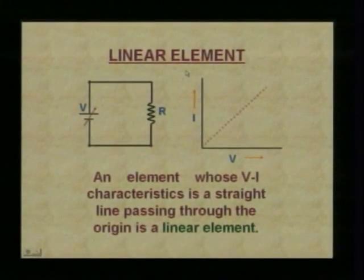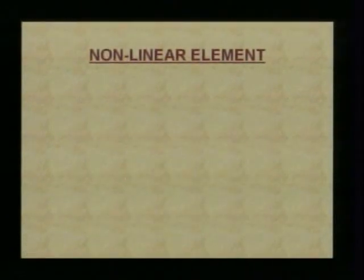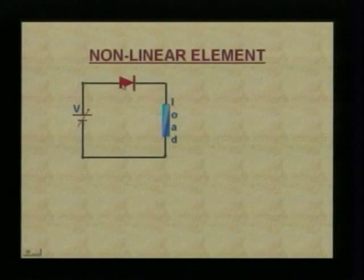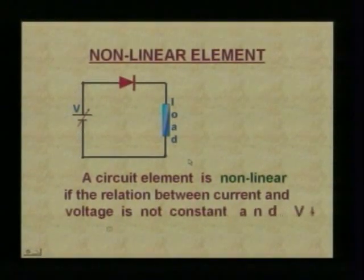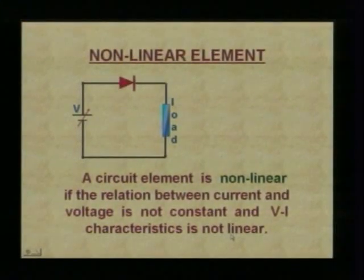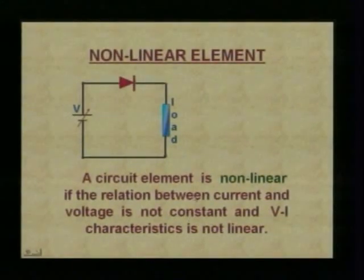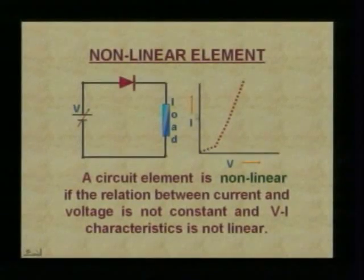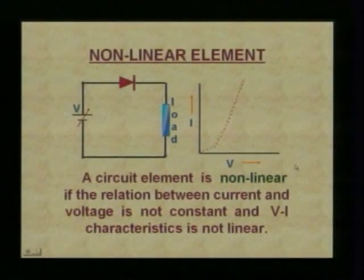Knowing about the linear element, let us talk about the non-linear element. A diode is a non-linear element. A circuit element is non-linear if the relation between current and voltage is not constant and the V-I characteristics is not linear. In the previous case the relation between voltage and current was a constant, whereas in a non-linear element the relation is not constant. We have the V-I characteristics of a diode — such an element is called a non-linear element.